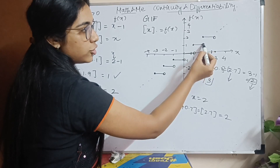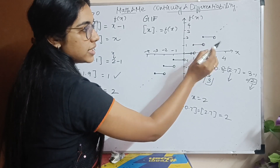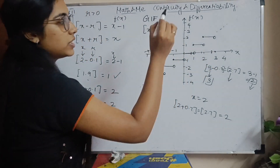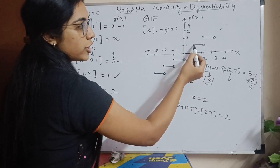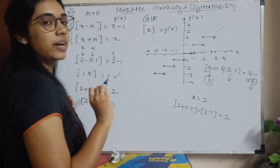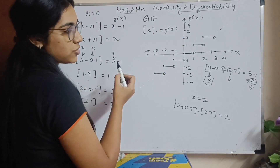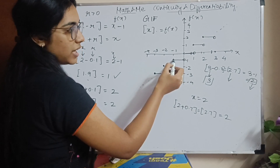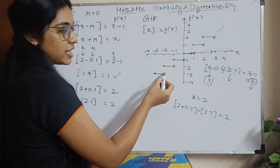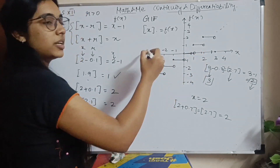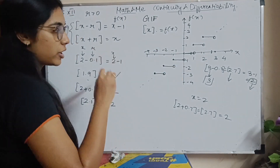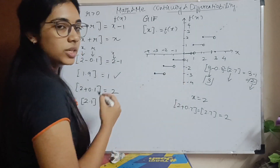At 2, this is a hollow circle — not a shaded one — so the value is not 1 there. The greatest integer function graph jumps at every integer: at 1, 2, 3, and so on. This also applies to negative numbers — at minus 1, minus 2, and so on, the value stays, but at minus 1.1 or minus 2-point-something, it jumps to the next level.